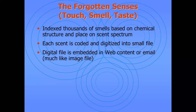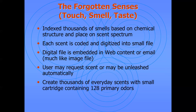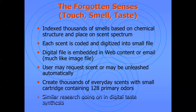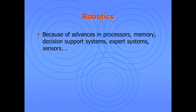This system indexes thousands of smells based on chemical structure placed on a scent spectrum. Each scent is coded and digitized into a small file. This digital file is embedded in web content much like an image file, and using a request — or released automatically — it creates thousands of air essences via a small cartridge containing 128 primary odors. Similar research is ongoing in digital taste synthesis.